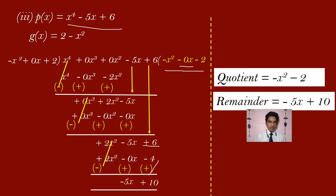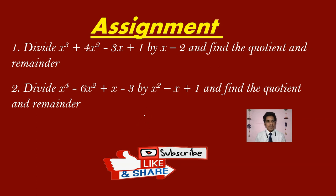This is how you can do the division of polynomials and find the quotient and the remainder. Now, this is your assignment for today: divide x cube plus 4x square minus 3x plus 1 by x minus 2 and find the quotient and remainder. Solve these two problems as early as possible and post the answers. We will discuss problem number 2 in the next tutorial. Thank you.